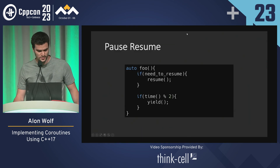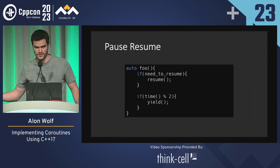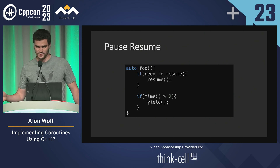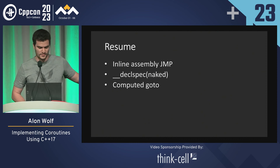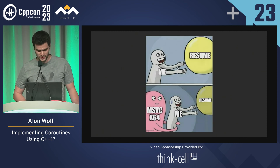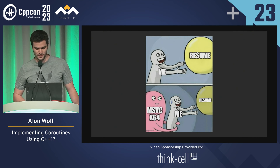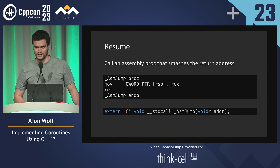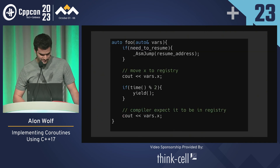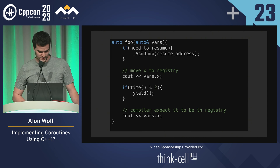So in a coroutine, we first need to check if we need to resume somewhere and then we resume, and inside the body we can yield to pause the coroutine anywhere we want. Here are three ways that you can implement resume, but none of them work with MSVC x64, which was my development environment at the time. So I wrote an assembly procedure that smashes the return address and I use it to implement resume.